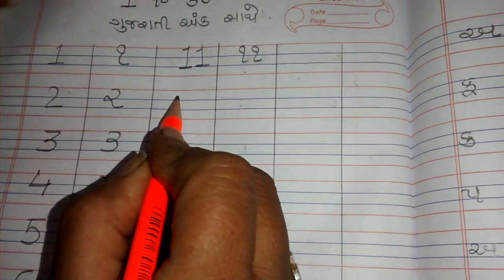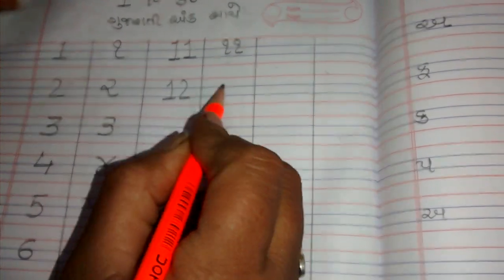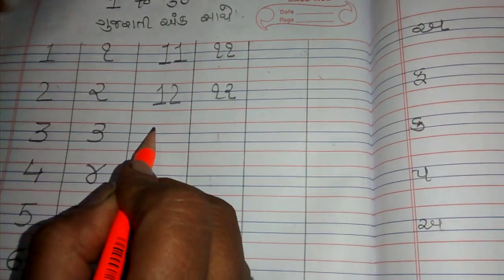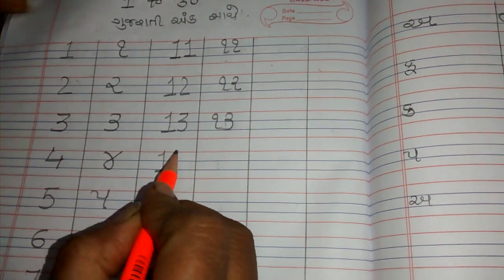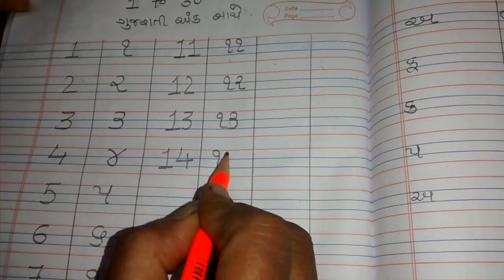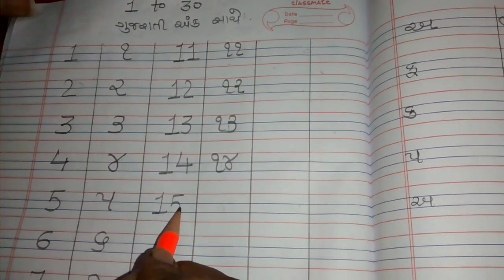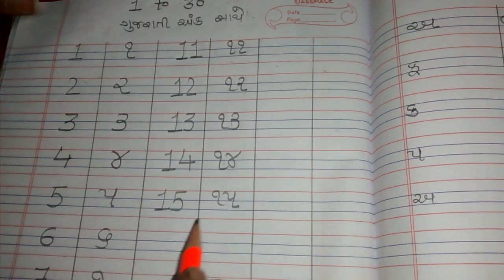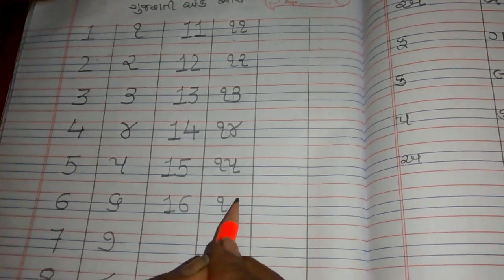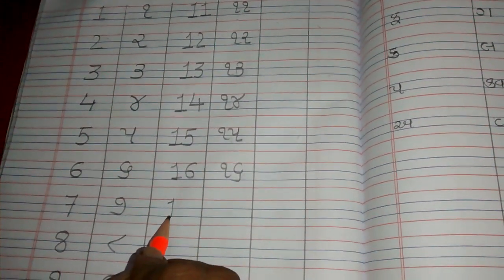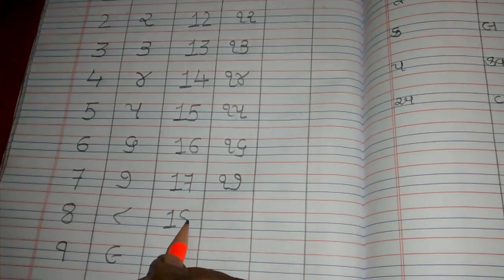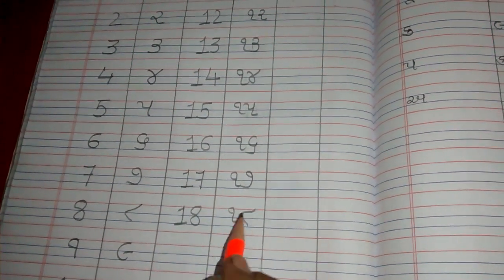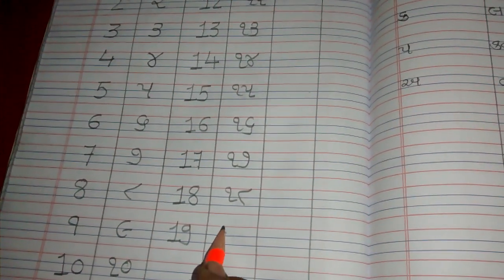11 atle 11, 12 atle 12, 13 atle 13, 14 atle Jaud, 15 atle Pandar, 16 atle Sod, 17 atle Sattar, 18 atle Atar, 19 atle Openies.